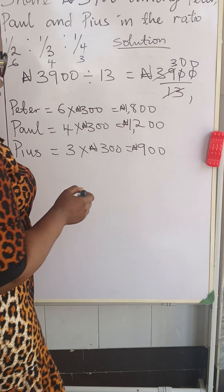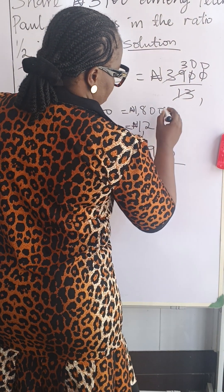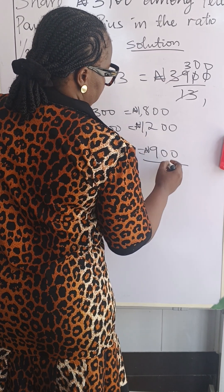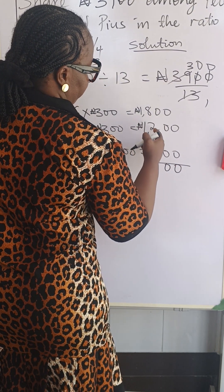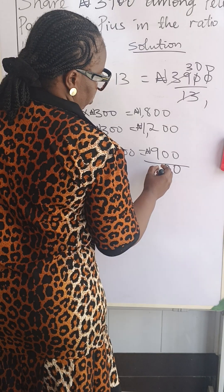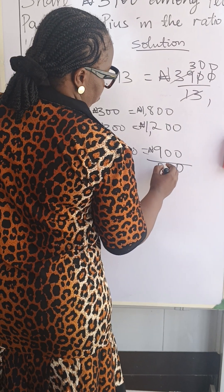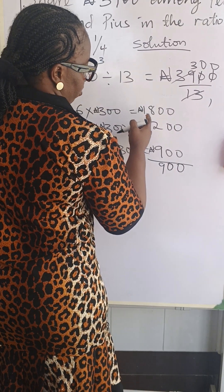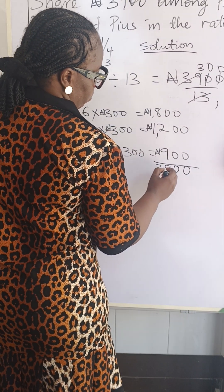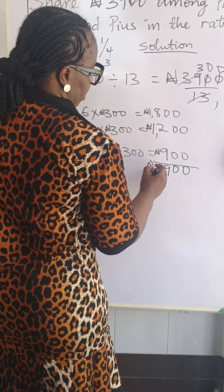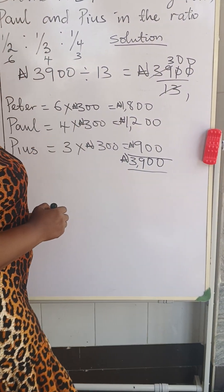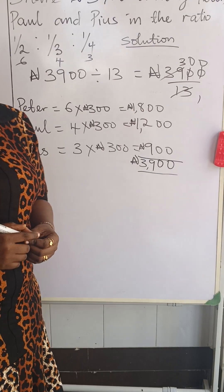To verify our answers, we add: one thousand eight hundred plus one thousand two hundred plus nine hundred. Eight plus two is ten plus nine is nineteen — write nine, carry one. One plus one plus two plus the carried one gives three thousand nine hundred, which confirms we are correct.